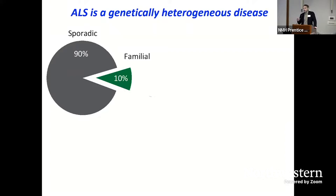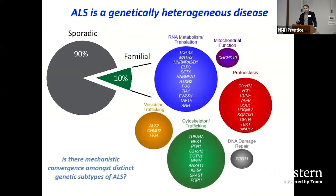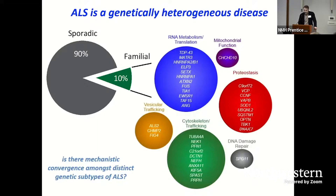As most of you know, the overwhelming majority of ALS is a genetically very heterogeneous disease. The overwhelming majority of patients suffer from sporadic disease; about 10% of cases the disease runs in families. There's been a wealth of genetic breakthroughs over the last 20 years, and we now know that there are mutations in more than 40 genes that can cause rare forms of genetic ALS. The central question we're interested in addressing in my lab is whether there is mechanistic convergence amongst all the distinct genetic subtypes of ALS, and whether what we find about genetic subtypes is relevant to sporadic disease. The way we do that is we study one gene at a time.